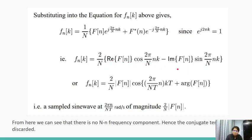Simplifying this using some trigonometric identities, we get the contribution as this, which is a cosine term with the argument of f of small n and magnitude 2 times F[n] by capital N. So we basically see that the contribution is a cosine term with some magnitude of the scale of F[n]. From here, we can see that there is no capital N minus n frequency component.